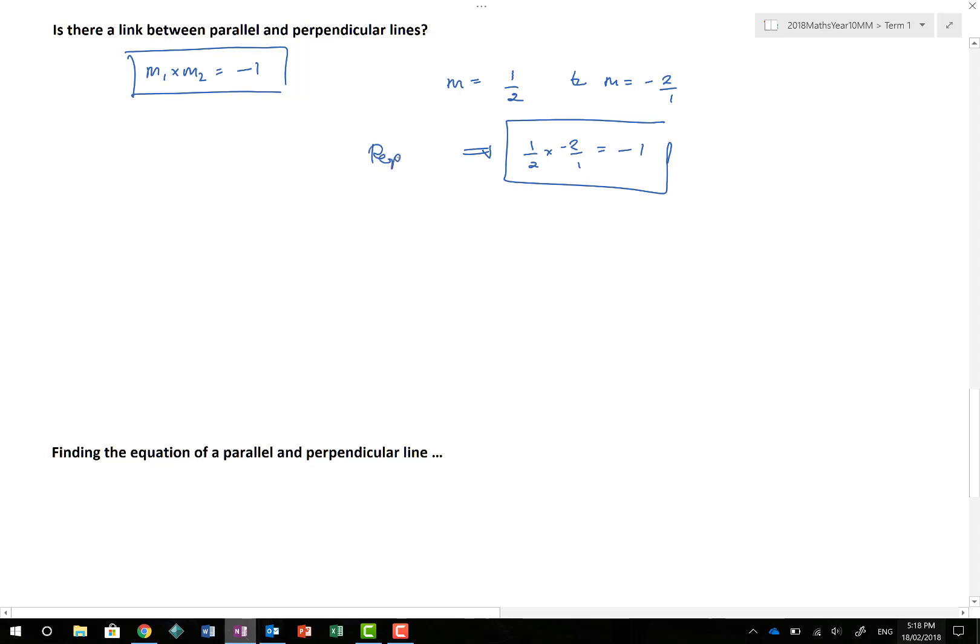Some people do some really crazy maths. My advice is, this is nice to have a look at, but if you have a gradient equal to 1 third for example, then you can find the perpendicular gradient by just flipping it, 3 on 1, and changing the sign. Obviously in this situation we wouldn't write negative 3 on 1, we'd just write negative 3, because any fraction divided by 1 is the whole number.